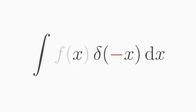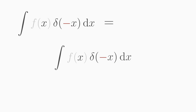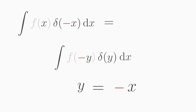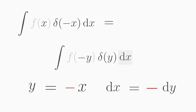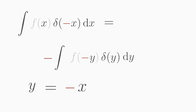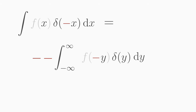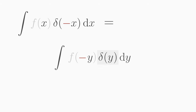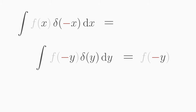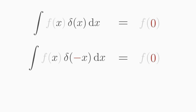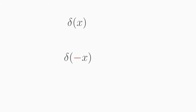Next, let's look at what happens when we have minus x in the delta. Making the substitution y equals minus x: delta of minus x becomes delta of y, and f(x) becomes f(−y). The derivative of y with respect to x is minus 1, so we replace dx with minus 1 times dy. The lower integration limit becomes plus infinity and the upper one becomes minus infinity. Reversing the integration limits introduces a minus sign that cancels the one from the substitution. Delta of y picks the value of f at y equals zero. This yields the same result as without the minus sign, so the delta function is symmetric.